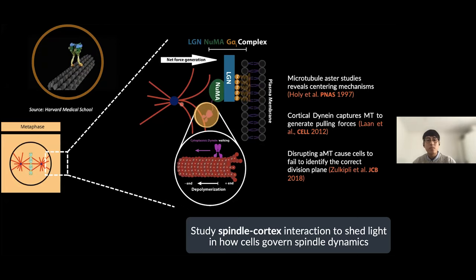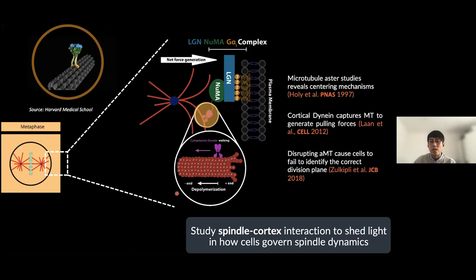By walking along microtubules, cells can generate pulling forces to displace the spindle — think of it like pulling a rope. The cell can exhibit different types of movements: it can rotate or move in a translational manner within the 3D space. However, we don't yet know how these movements are governed by the cell. To gain a better understanding, we study spindle-cortex interactions by perturbing various cortex or microtubule-associated proteins and observing how it affects spindle movement.